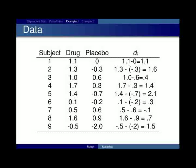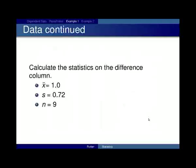So, for those nine observations, you just do a hypothesis test on the differences. So, 1.1 through 1.5, that's what we're going to do the test on. So, you calculate the statistics on the difference column. You can ignore everything else at this point. The mean of all the differences is 1.0. The standard deviation is 0.72. And the sample size is 9.